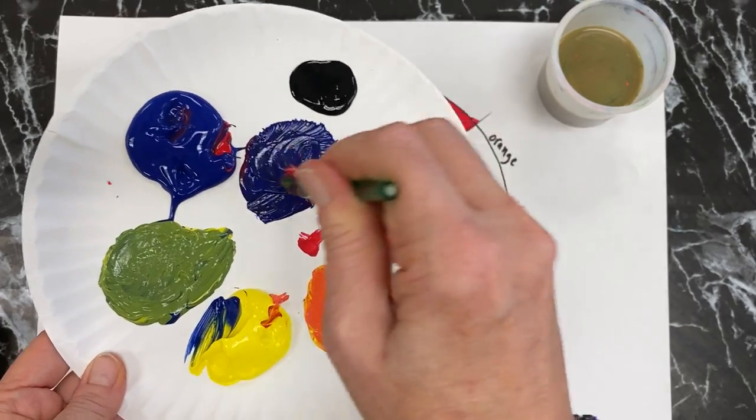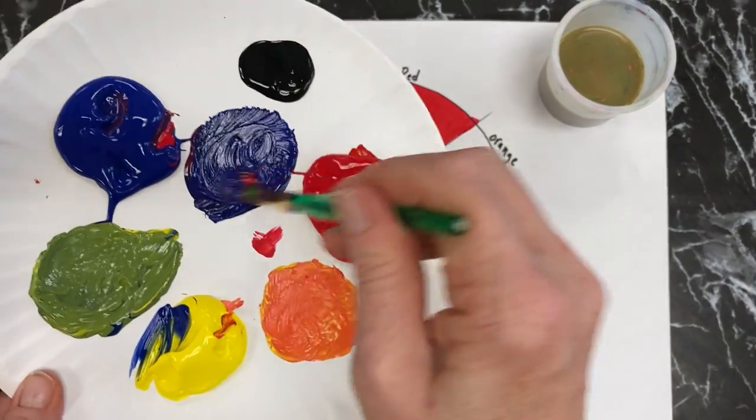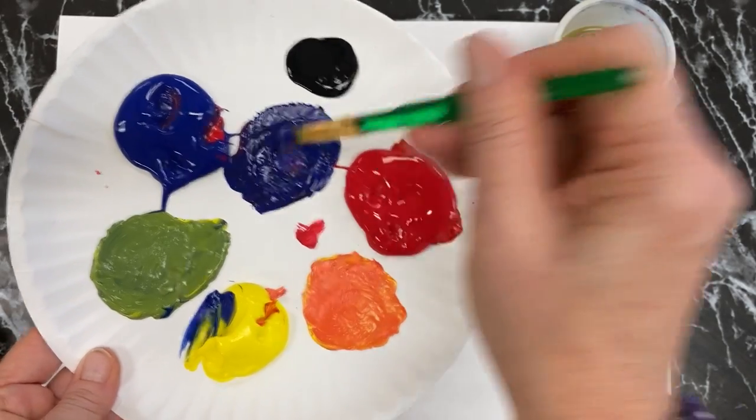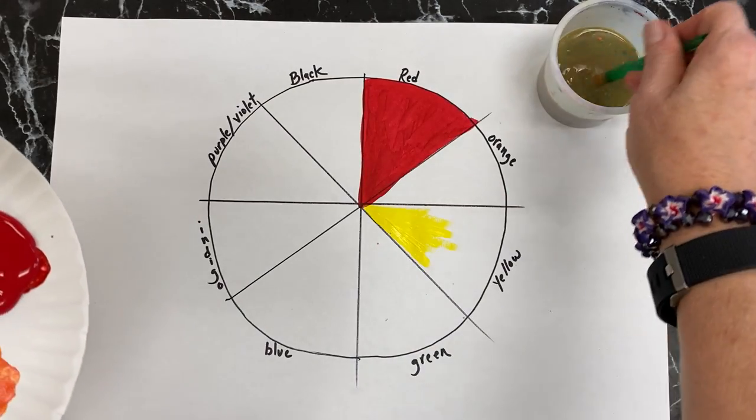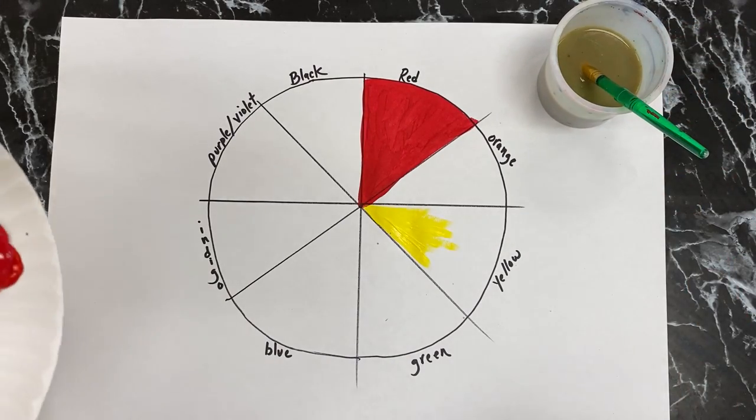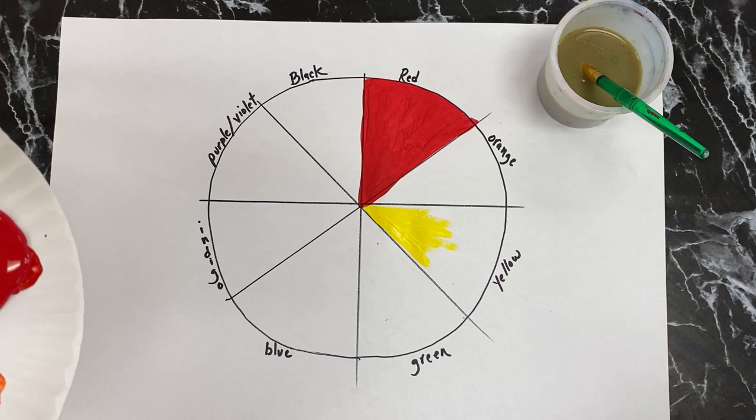And you get kind of like a navy blue and that represents your indigo. Okay, the last section obviously you just have to paint black and then you're done.